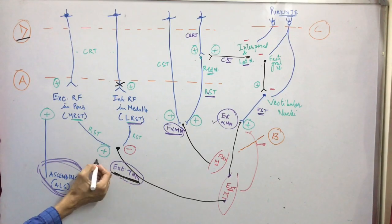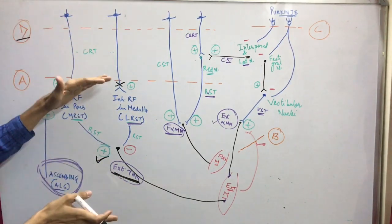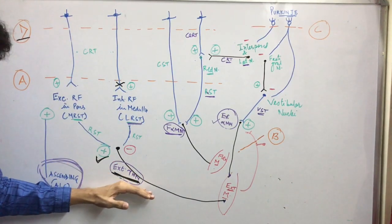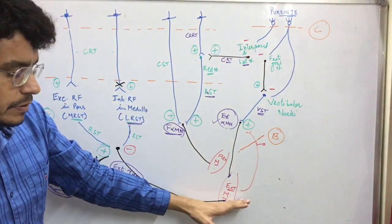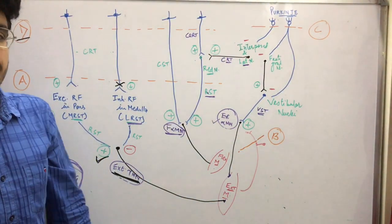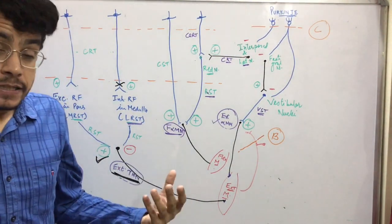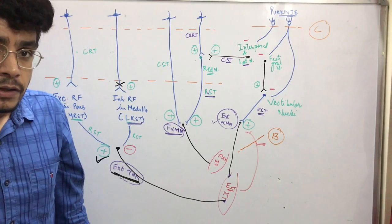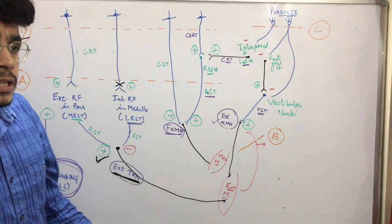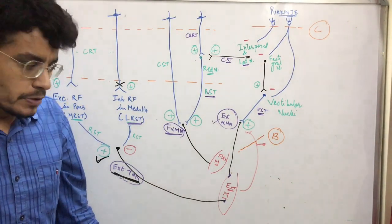But the medial reticulospinal tract has its own rhythm through the ascending tracts, so the extensor gamma motor neurons will get more and more stimulated compared to a normal person. If there is more stimulation of the gamma motor neuron supplying the extensor muscles, what will happen to the person's posture? The extensor muscles of the arm, back, as well as the legs will be hypertonic — we can say rigidity will be there, extensor rigidity.